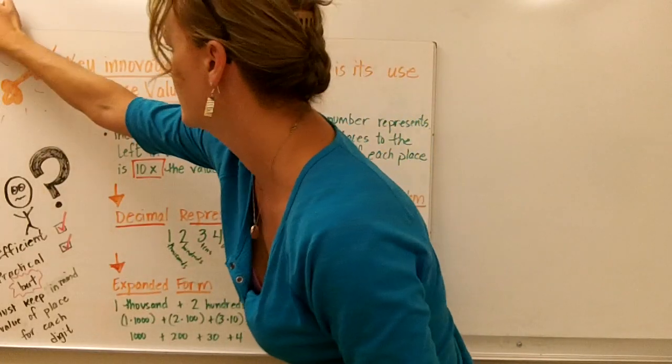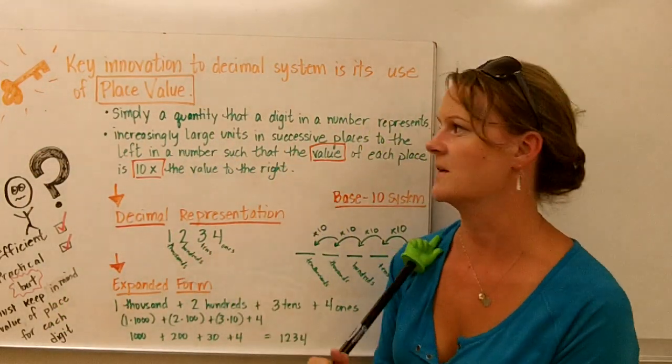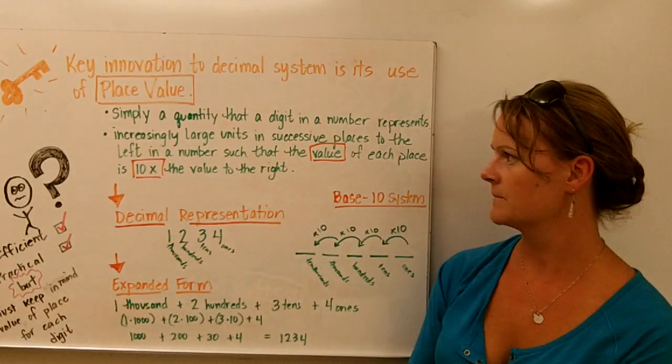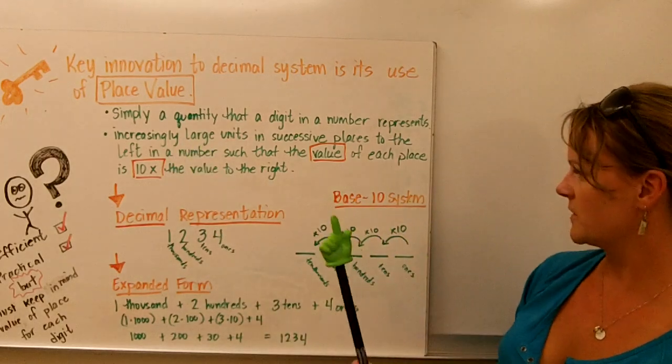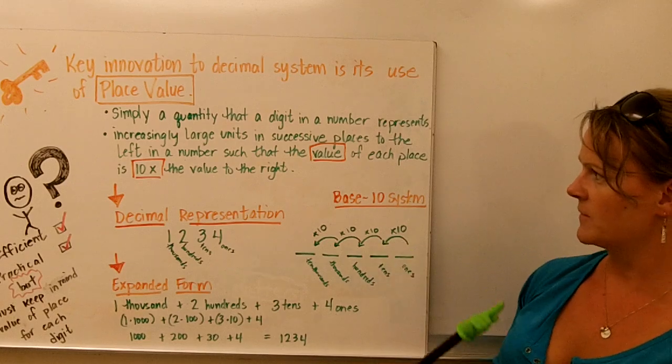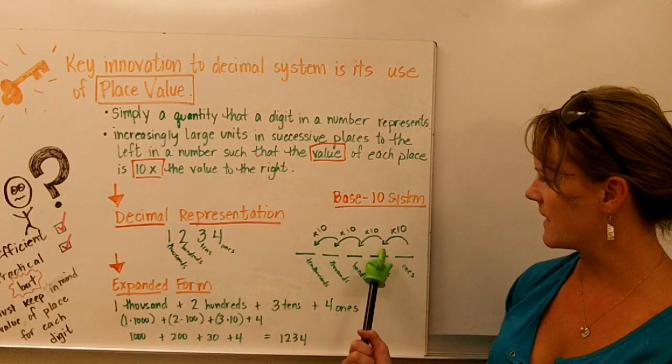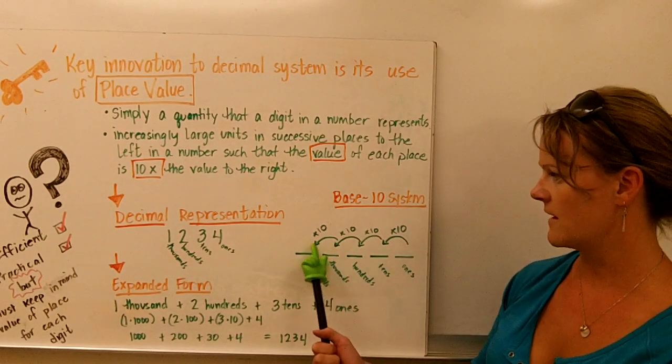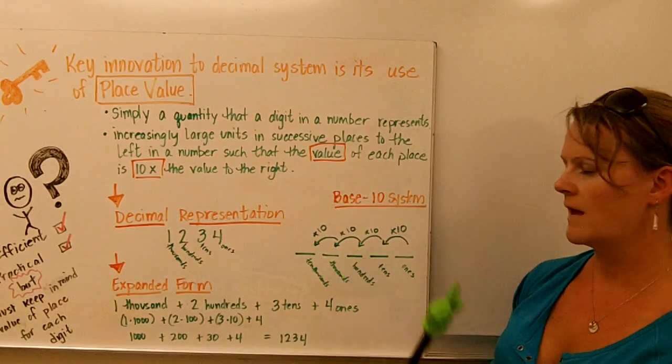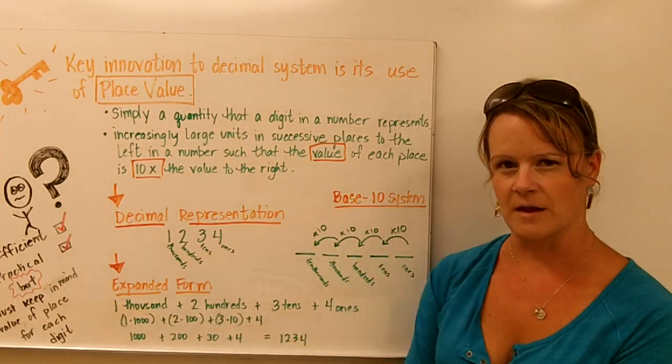Let's talk a little bit more about place value. The real key innovation to the decimal system is its use of place value. Place value is simply a quantity that a digit in a number represents. So increasingly large units in successive places to the left in a number. If you look here, this will make perfect sense. Such that the value of each place is ten times the value to the right. In other words, as we move to the left, the value of each place is ten times greater. This place here has a value ten times greater than the place here.